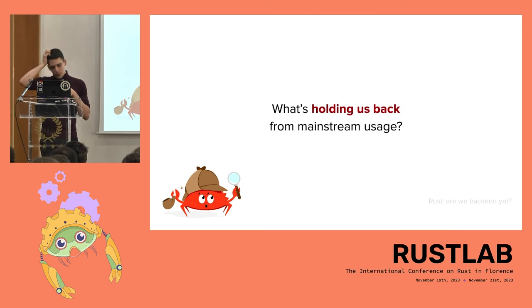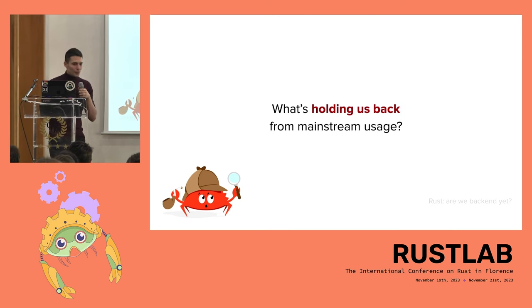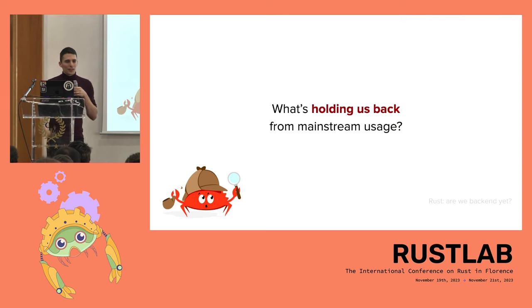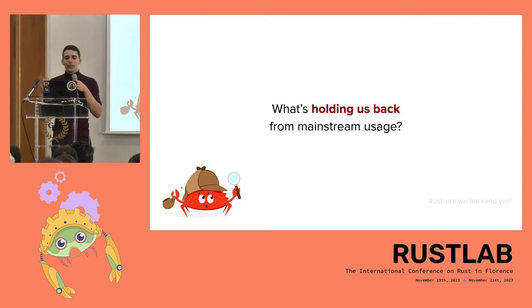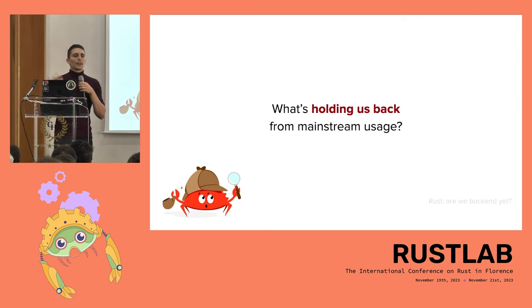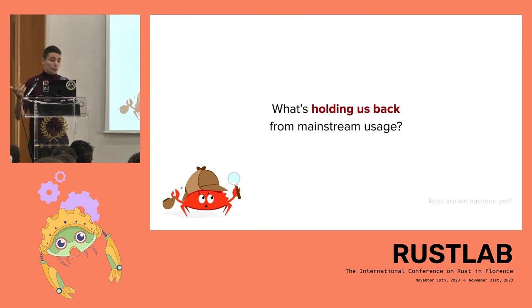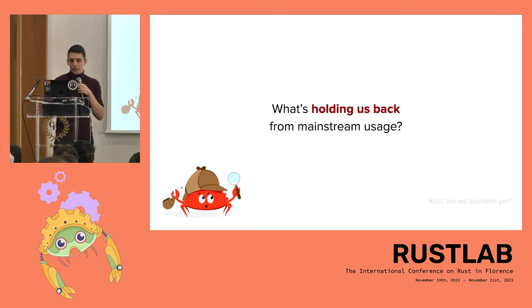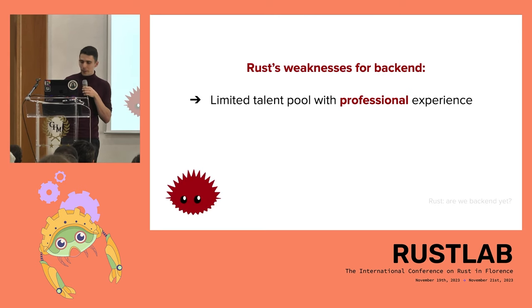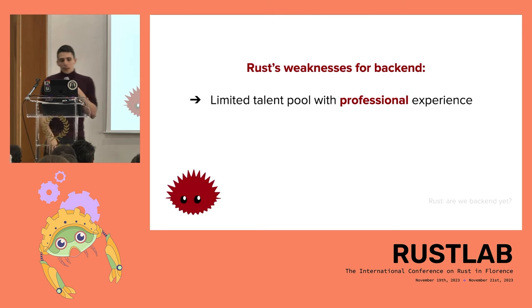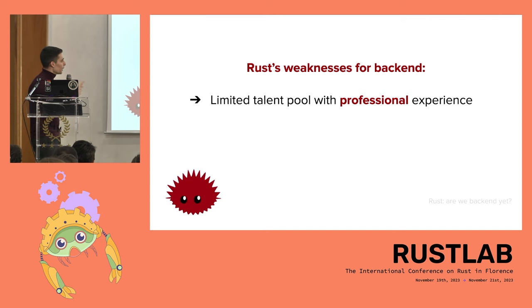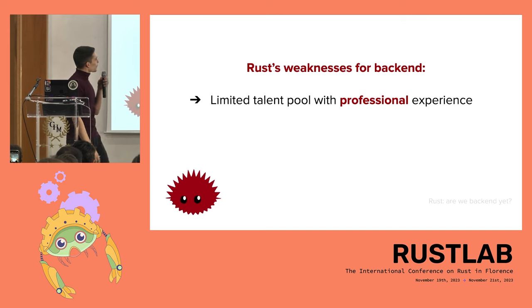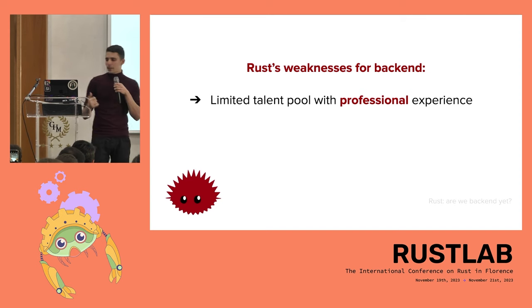So we've got all these cool things, we've got all these niches that we are succeeding in. What's holding us back from being the next Ruby on Rails? I think there are three weaknesses, and this is my personal view — obviously these are not truths.